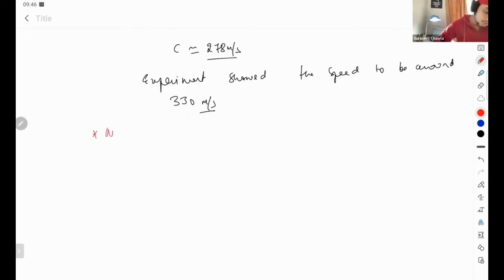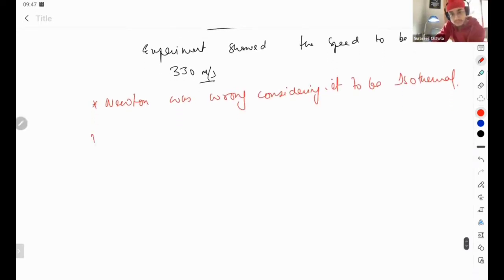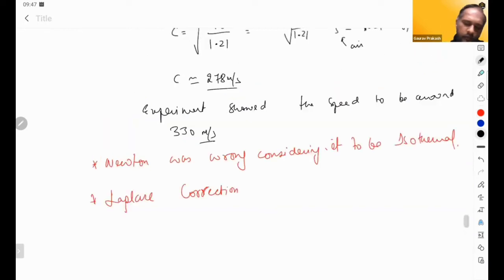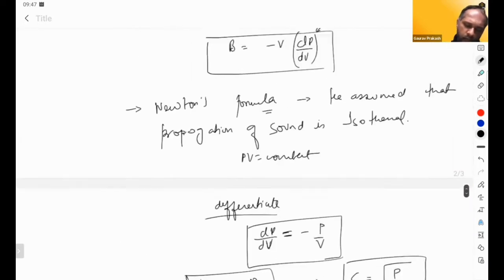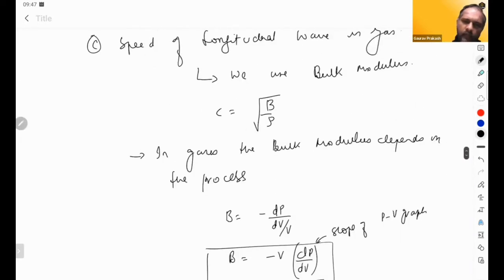So Newton was wrong. There came another scientist, Laplace. He gave the Laplace correction. Now for him, the work was easy. He saw that everyone had made a story that the longitudinal wave in the formula is B by rho, etc.